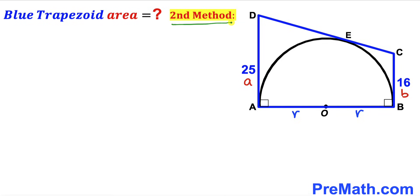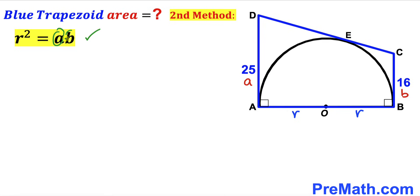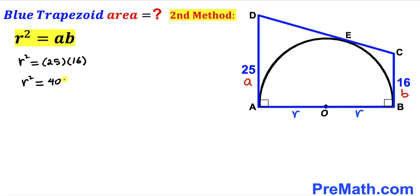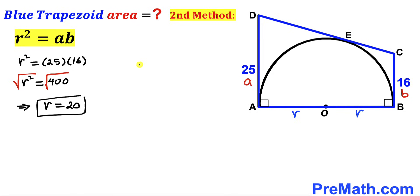Now for the second method: I'll show how to find radius r using a magic formula. The formula is r² equals base A times base B. With base A equal to 25 and base B equal to 16, we get r² = 25 × 16 = 400. Taking the square root gives r = 20 units, confirming our result from the first method.